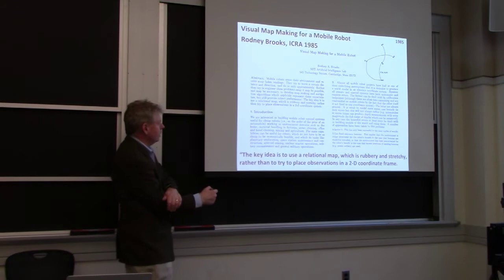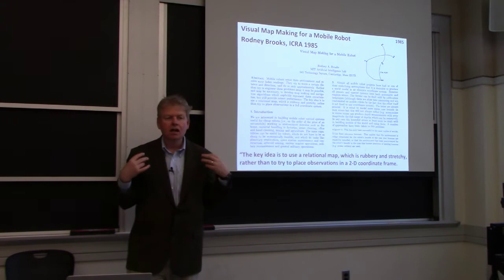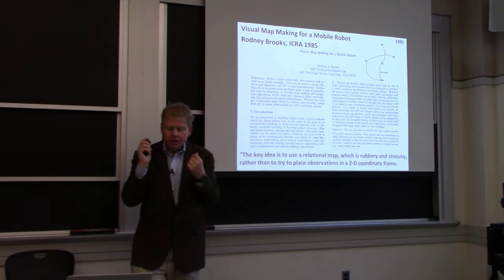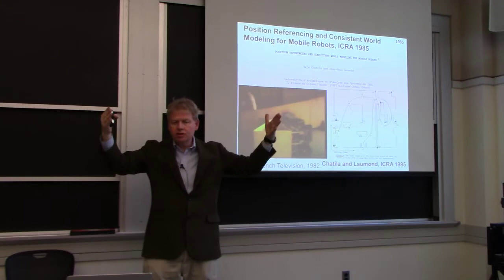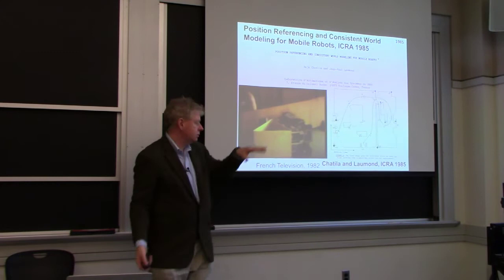Another really pivotal paper from that conference was Rodney Brooks, who advocated for using vision — way ahead of his time — and using what he called a 'rubbery stretchy map representation.' The abstract: 'Mobile robots sense their environment and receive error-laden readings. They try to move a certain distance and direction and do so only approximately. Rather than try to engineer these problems away, it might be possible and may be necessary to develop map-making and navigation algorithms which explicitly represent these uncertainties but still provide robust performance.' To me, that's the birth of probabilistic robotics. It was also happening in France — trying to think about how to measure and deal with uncertainty.